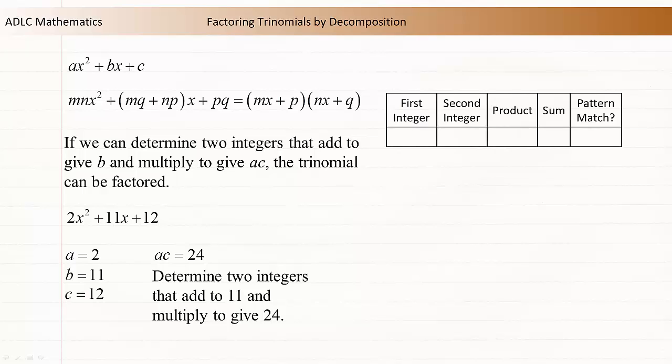Again, we can use a table to determine these integers. Let's pick integers that we know will multiply to give 24. 1 times 24 is 24, but 1 plus 24 is 25. This isn't a match.